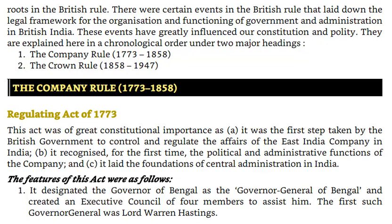The Company Rule, 1773–1858. Regulating Act of 1773. This act was of great constitutional importance as: (a) it was the first step taken by the British government to control and regulate the affairs of the East India Company in India; (b) it recognized, for the first time, the political and administrative functions of the Company; and (c) it laid the foundation of central administration in India.